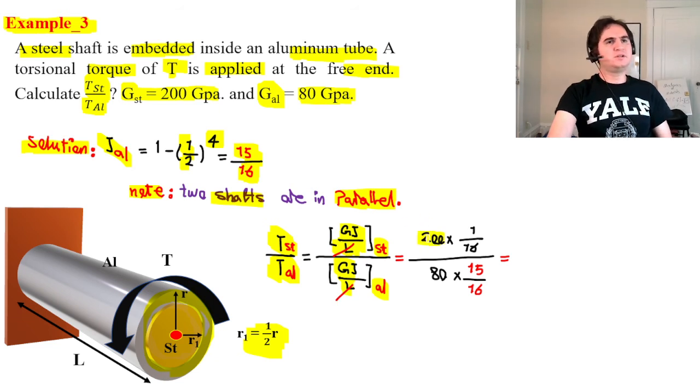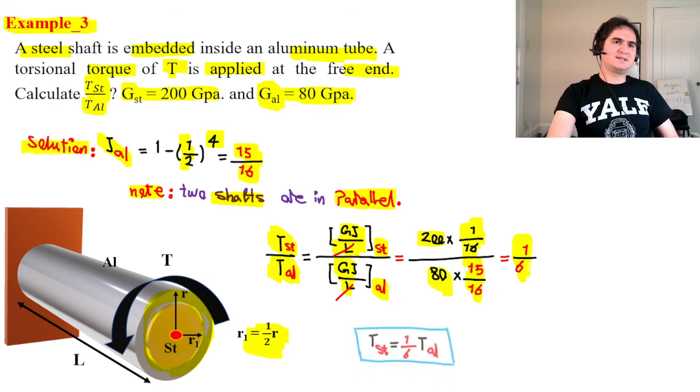200 which is rigidity modulus of steel times the share for steel. We know the share for aluminum or J for aluminum is 15 over 16. So it goes by denominator. And the rigidity modulus for aluminum is 80 GPa. So 200 times 1 over 16 over 80 times 15 over 16. If you do the math it gives you 1 over 6.